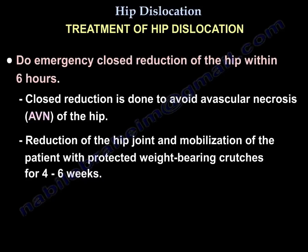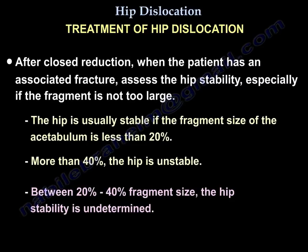Treatment of hip dislocation: perform emergency closed reduction of the hip within six hours to avoid avascular necrosis. Follow with mobilization of the patient with protected weight bearing on crutches for four to six weeks. After closed reduction, when the patient has an associated fracture, assess the stability, especially if the fragment is not too large. The hip is usually stable if the fragment size of the acetabulum is less than 20%; if it is more than 40%, the hip is unstable.